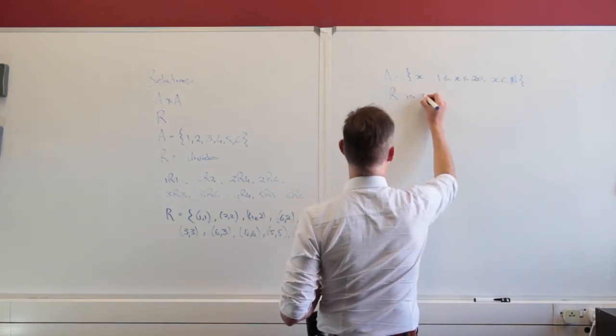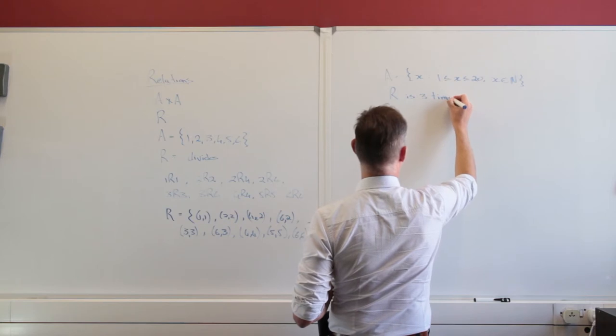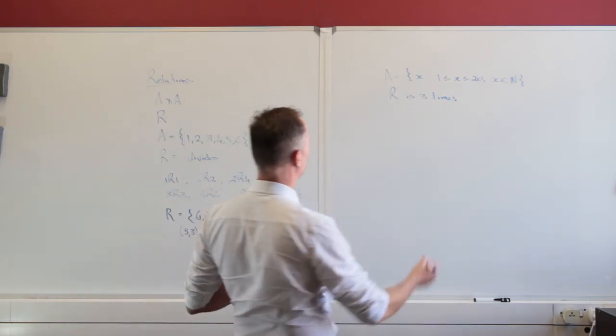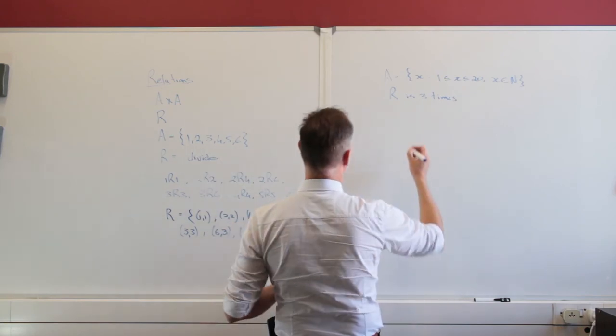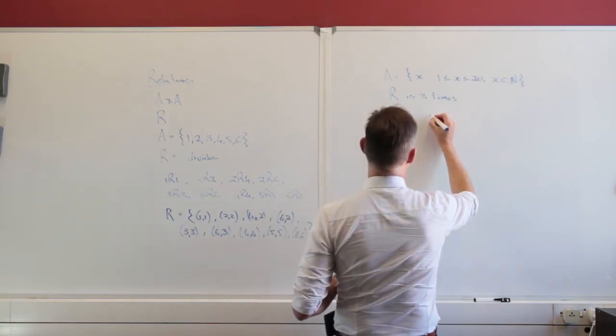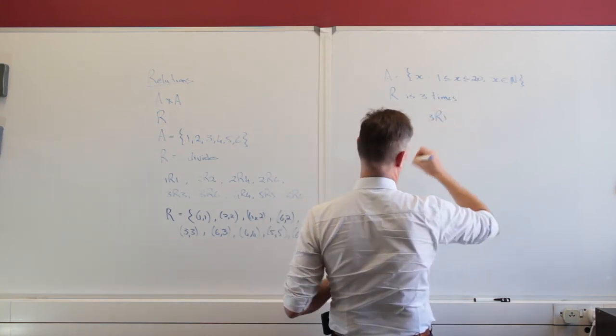And my relation is 'is 3 times'. R is '3 times'. So that might sound a bit odd again. So R is just going to be the following.